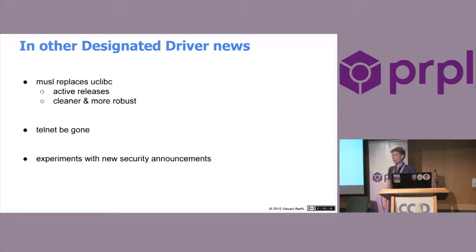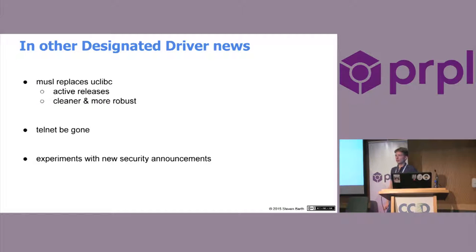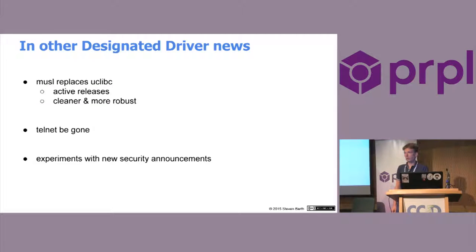We switched away from uClibc, which was the C library we've been using — or at least for most platforms we are now switching away, except for MIPS64, which is not yet supported by musl. We're choosing musl now because it has active releases and a very clean and robust code base. Compared to uClibc, there haven't been any releases for two or three years, so we don't consider it a good choice for a clean, security-enabled system anymore.